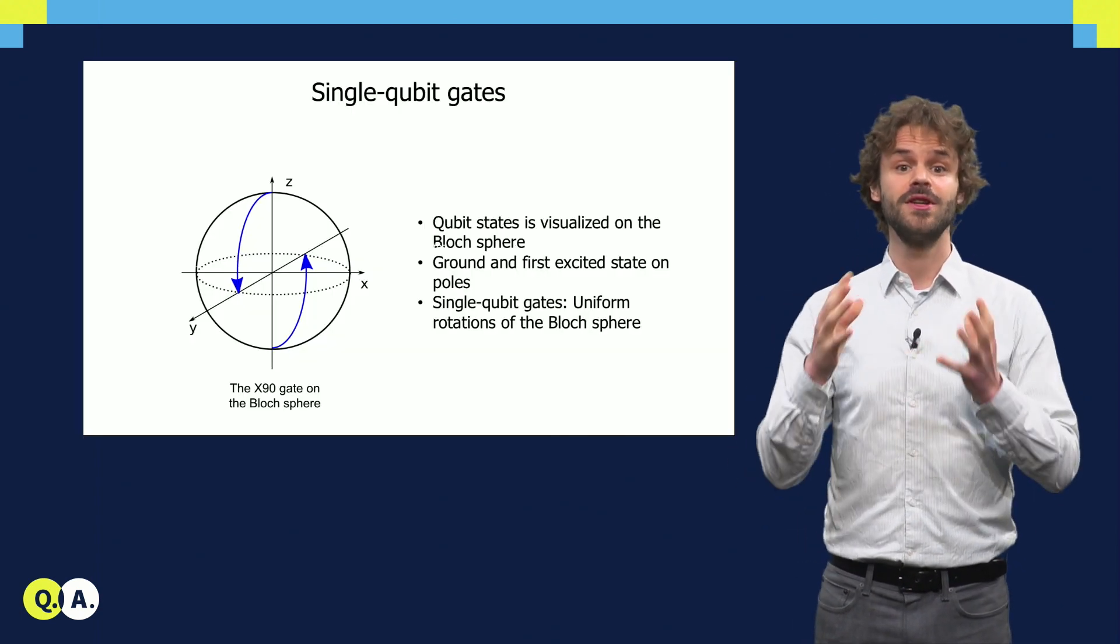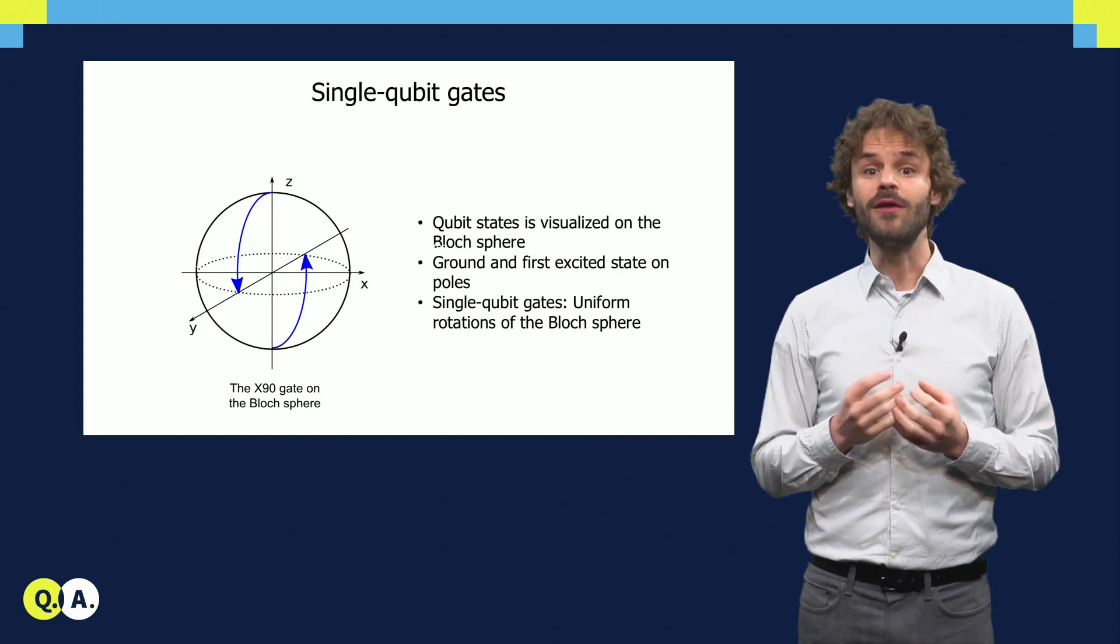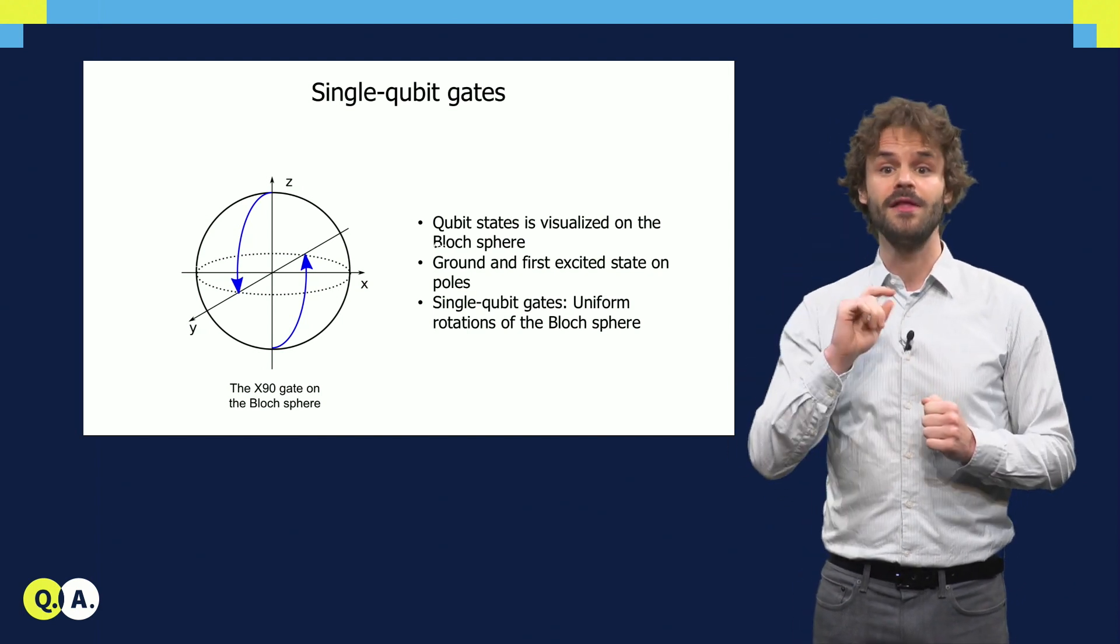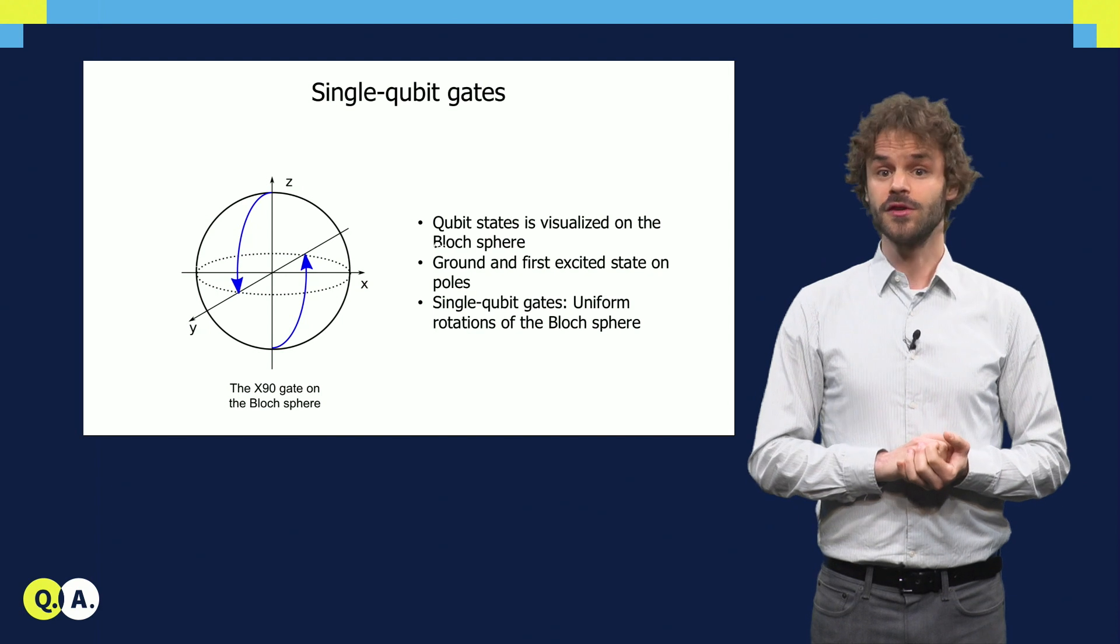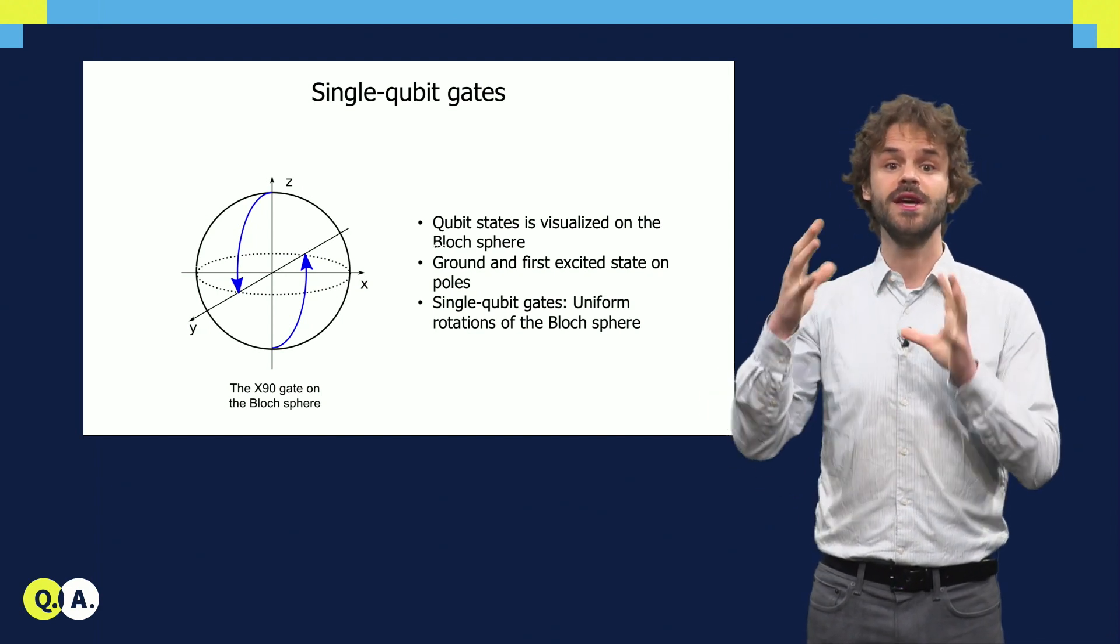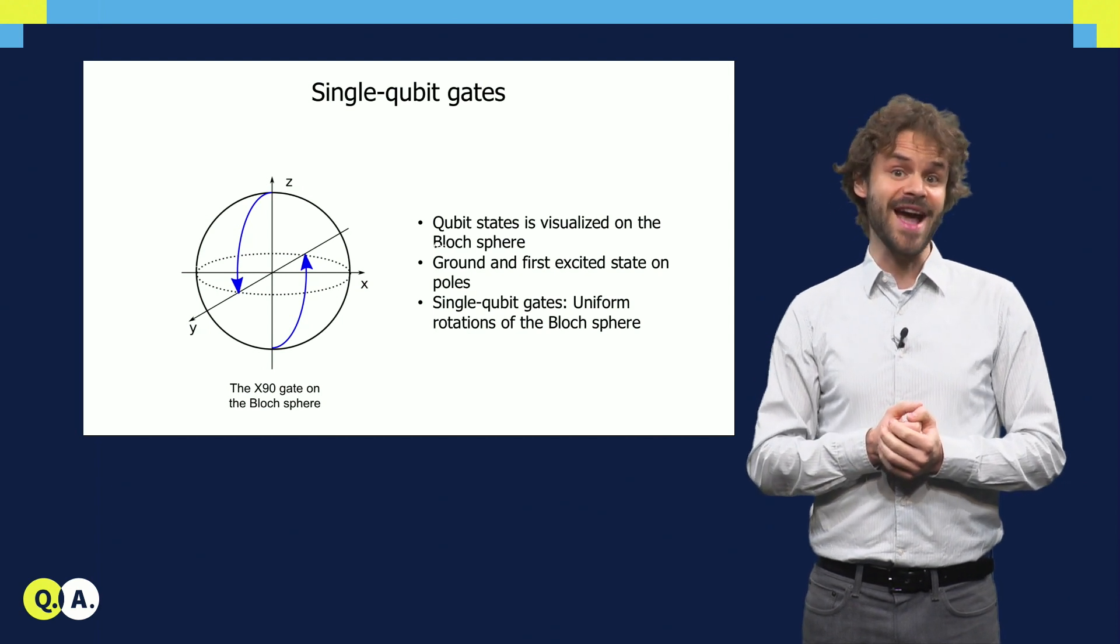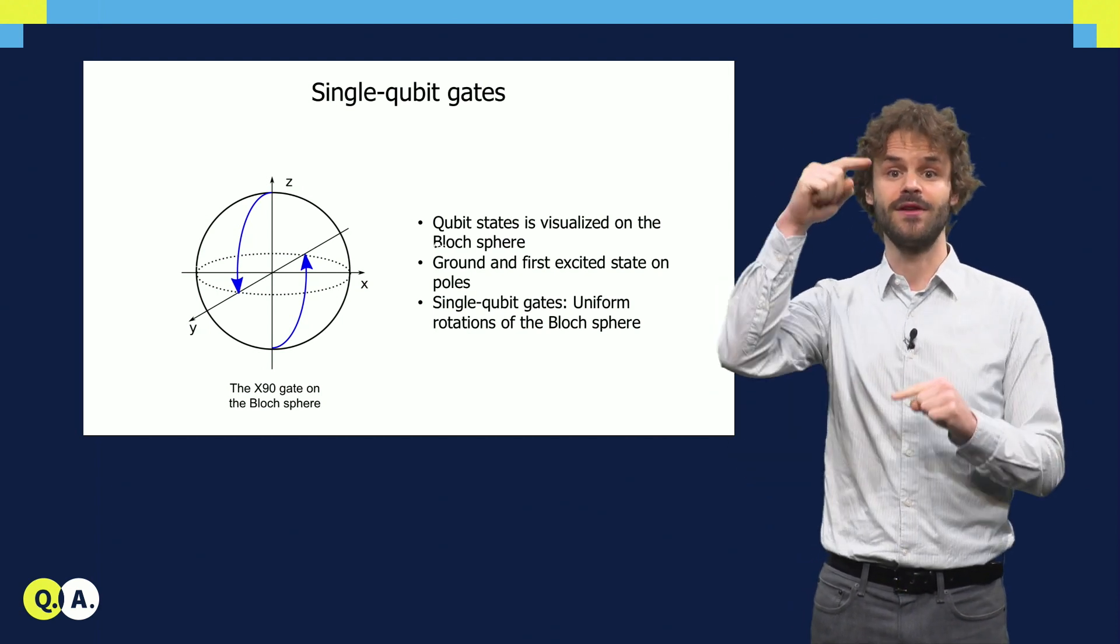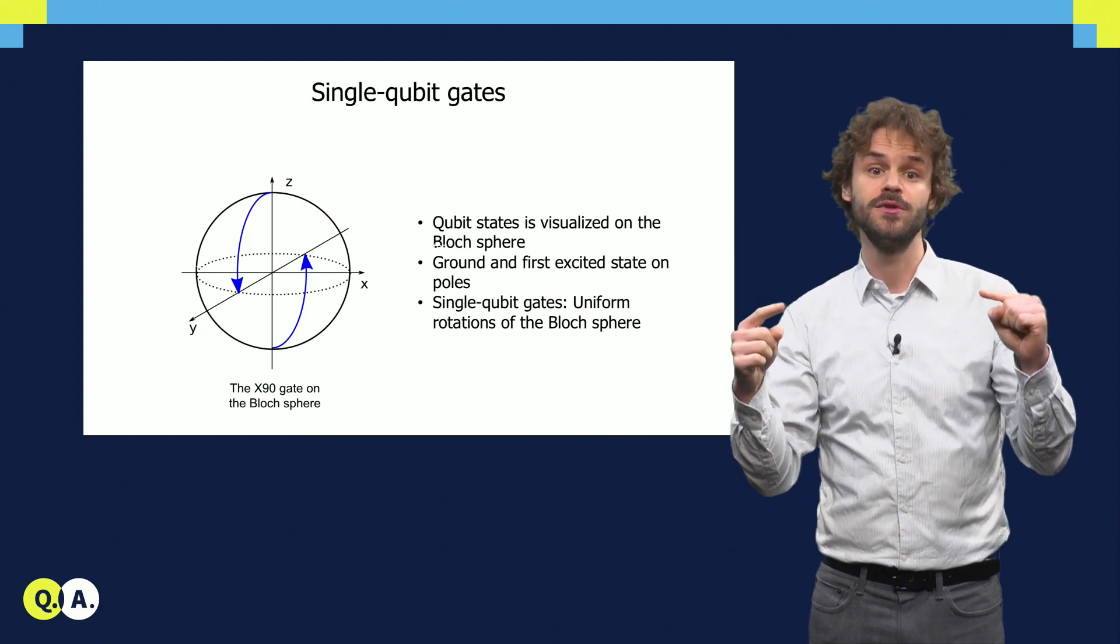The state of a single qubit can be visualized in the Bloch sphere, with the ground and excited state on the poles and the other points on the surface corresponding to quantum superpositions. Single qubit gates are then rotations of the Bloch sphere, for instance here the X90 gate, which converts the ground and excited states into superpositions.